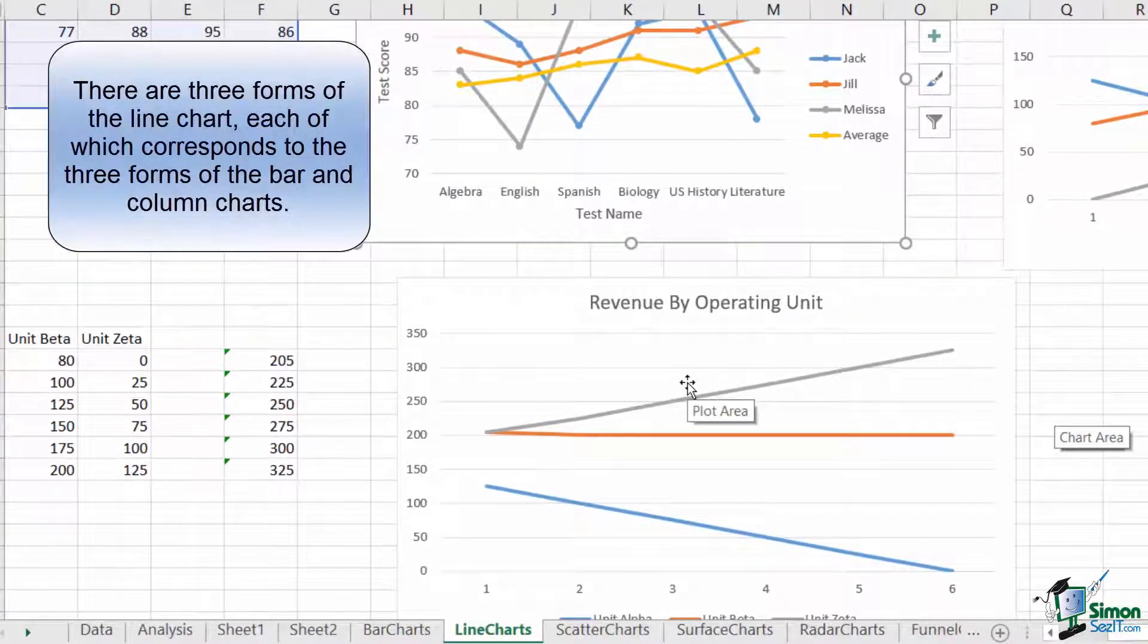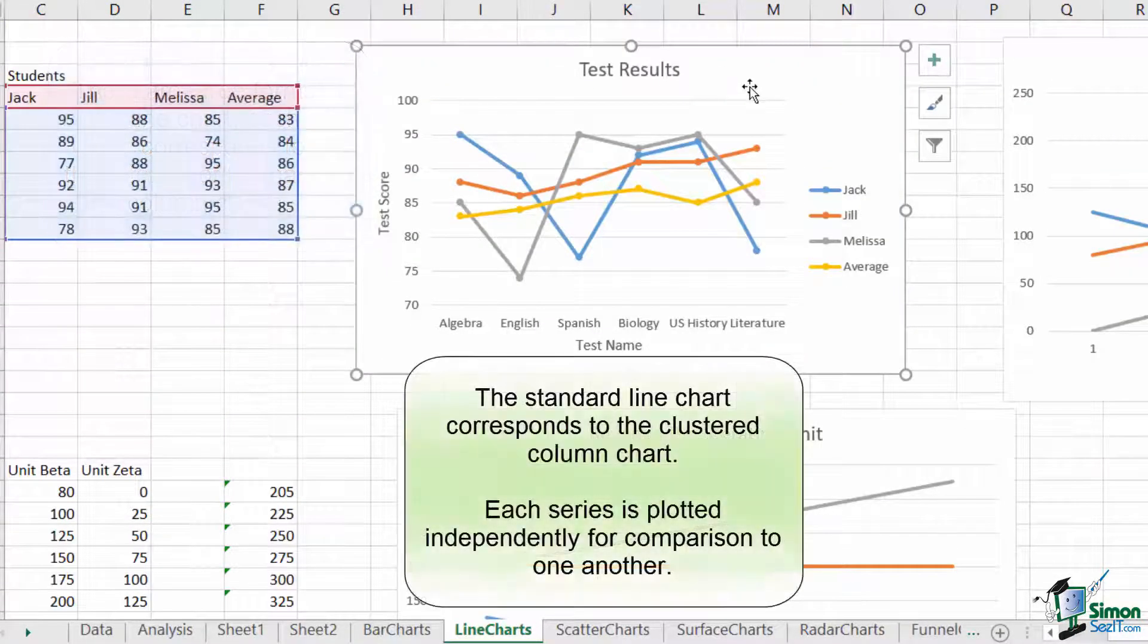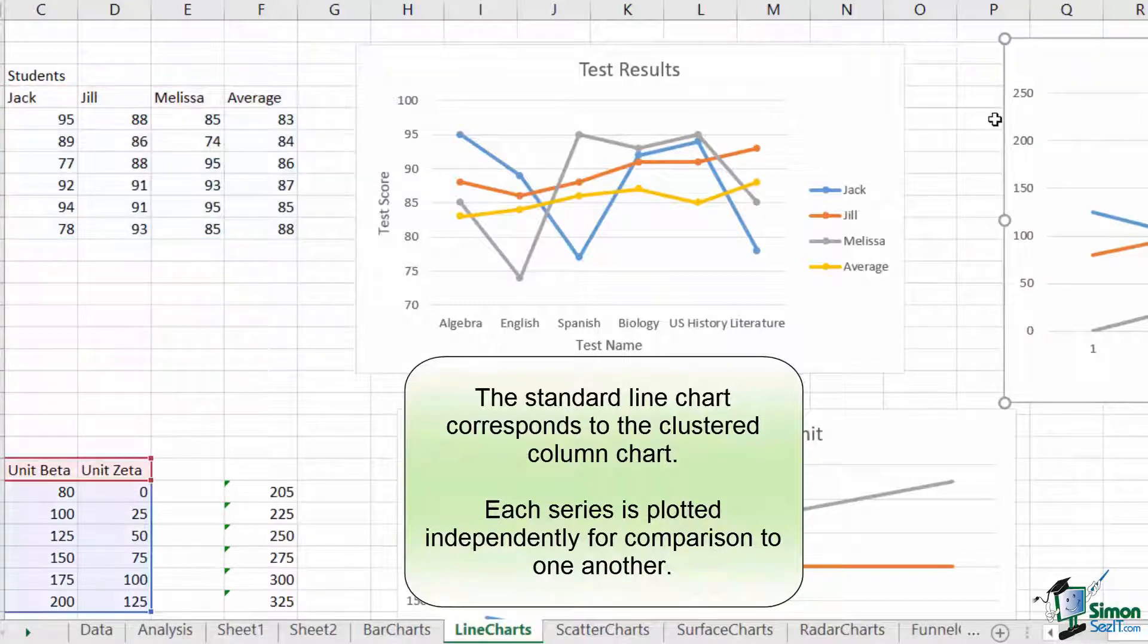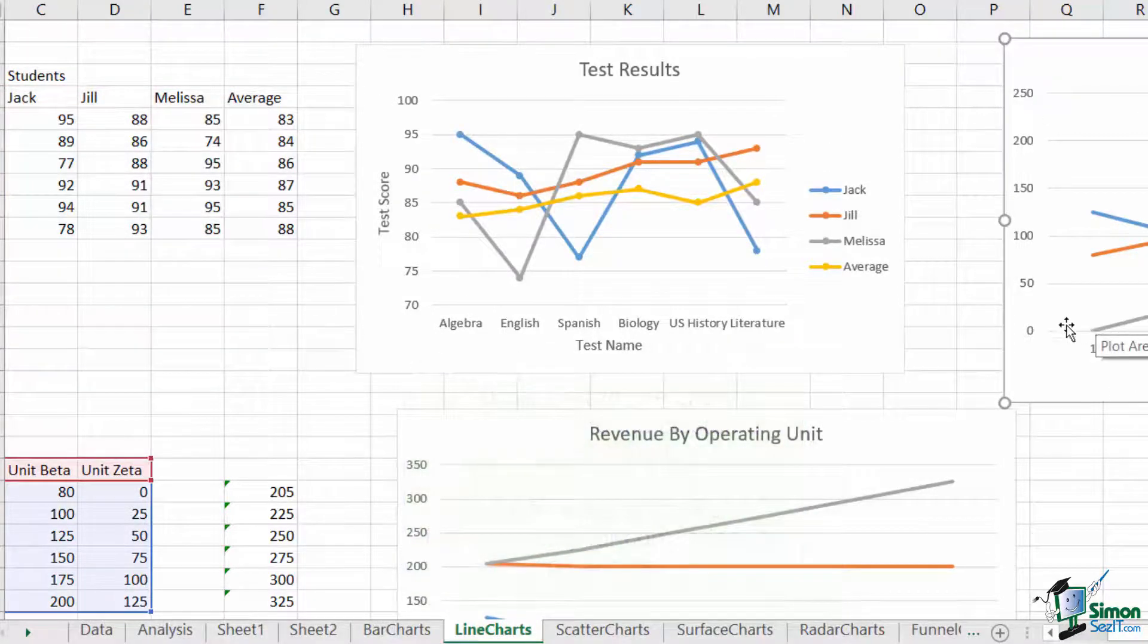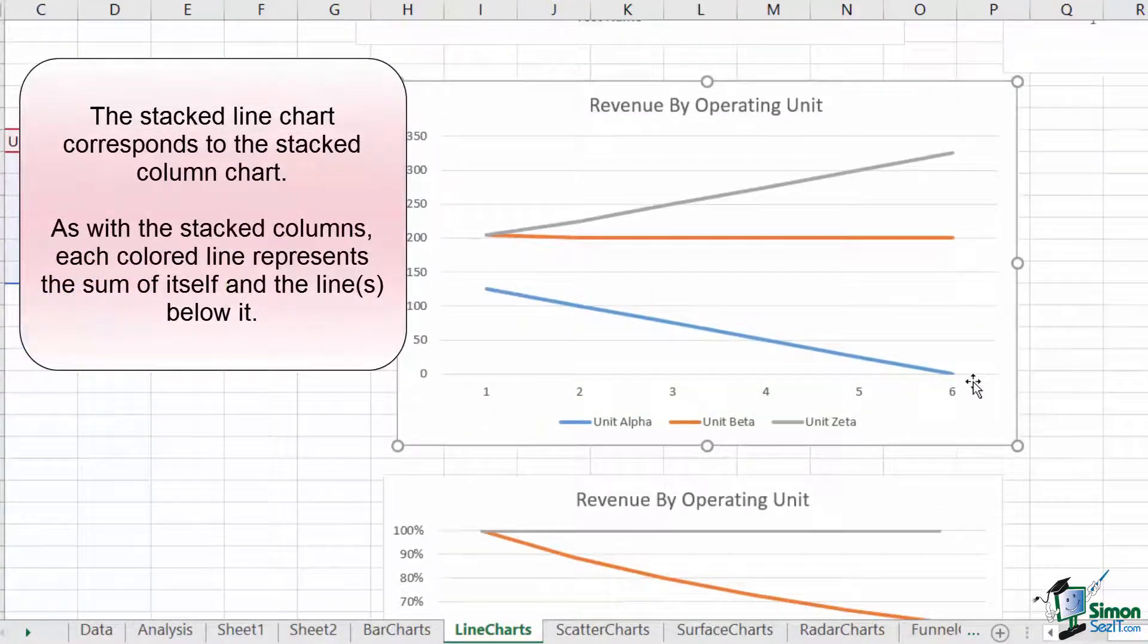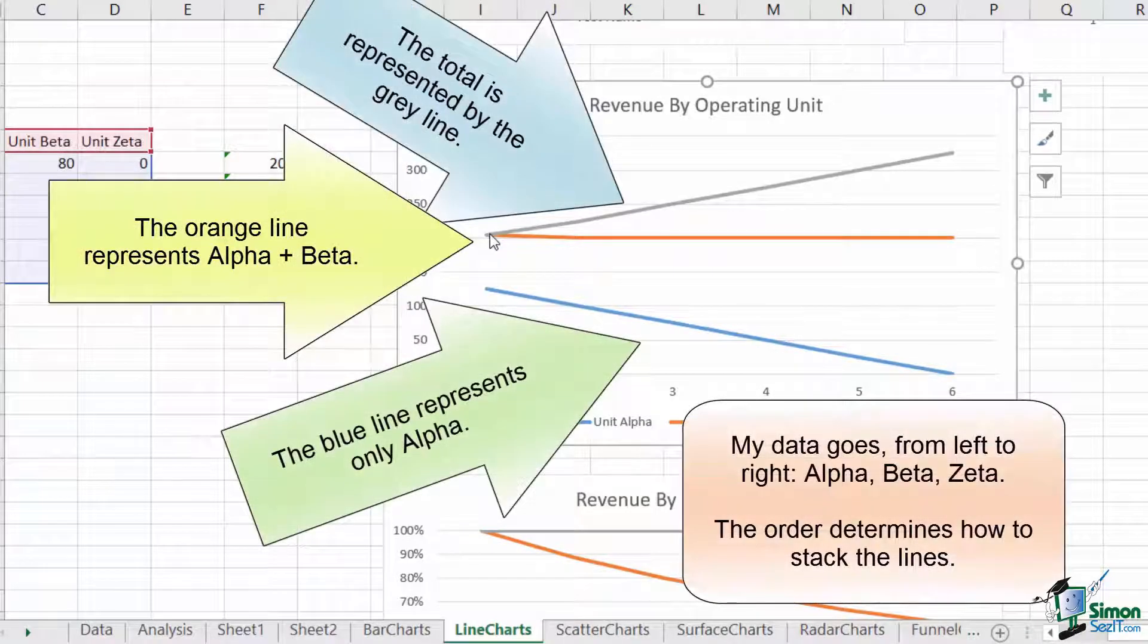Line charts have three functions that are identical to their column chart brethren. The standard line chart is like a clustered column chart where each value is plotted independently, and then the lines are connected. The stacked line adds them together to show how the whole is moving relative to the individual components. Here you can see that the whole is represented by the gray line, as that is the blue plus the orange plus the gray data.